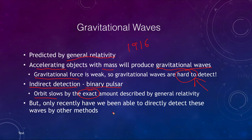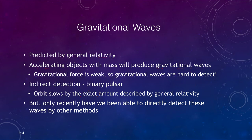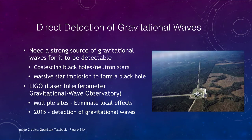However, it was only recently that we've been able to directly detect these gravitational waves. In order to detect them, we need a very strong source. The Moon, the Sun, and the Earth moving are not going to be nearly strong enough. So what we look for is coalescing black holes or neutron stars — objects with very large mass that, as they coalesce together, give off massive amounts of gravitational waves.